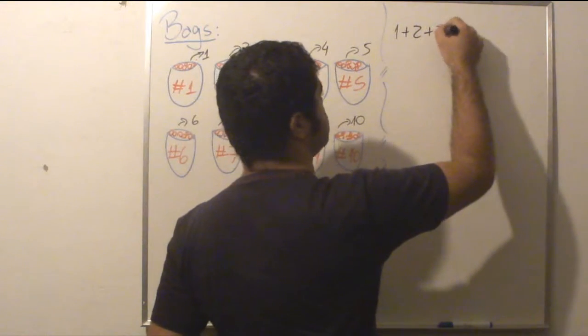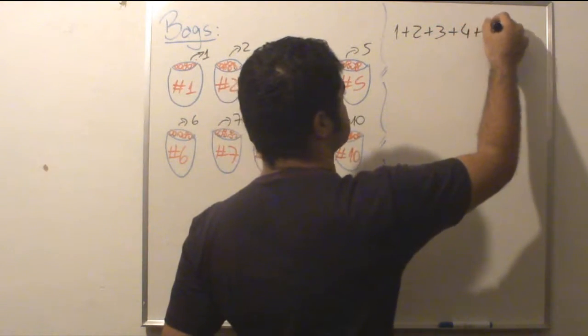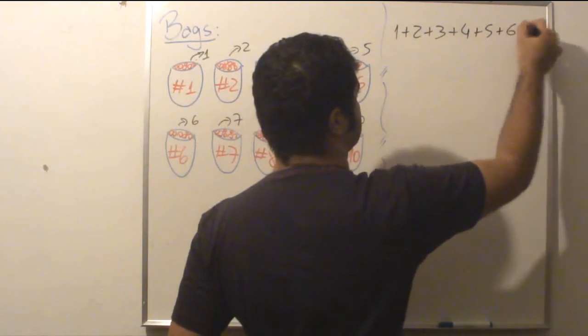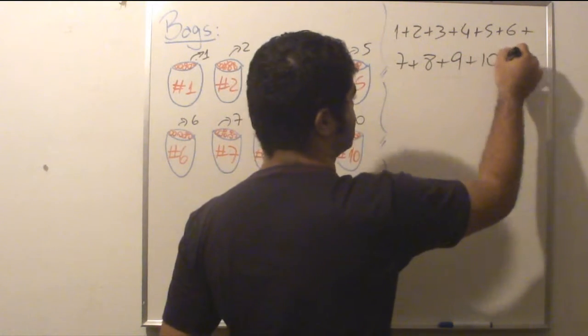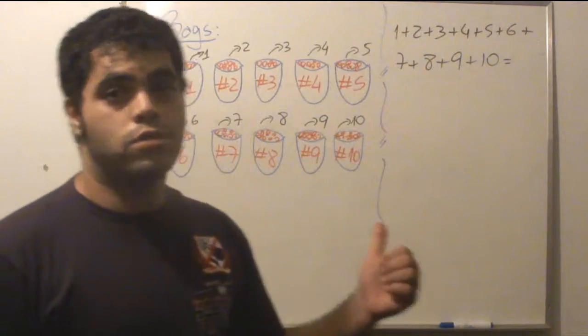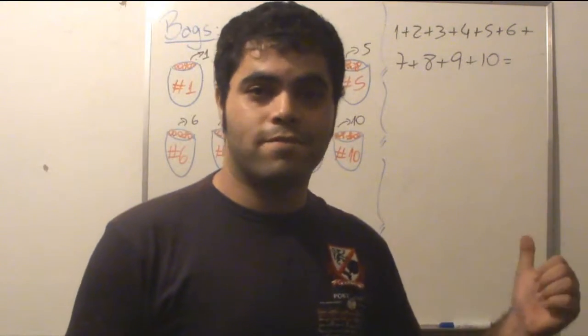One plus two plus three plus four plus five plus six plus seven plus eight plus nine plus ten. Of course I'm weighing 55 coins.